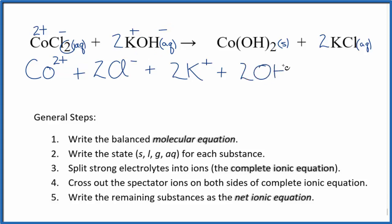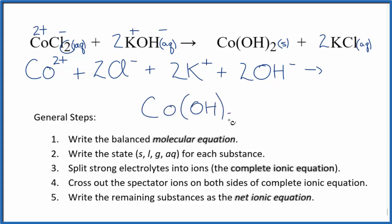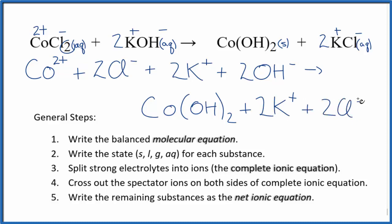These are the reactants in our net ionic equation. For the products, we don't split solids apart in net ionic equations, so this precipitate — Co(OH)₂, cobalt 2 hydroxide — we just leave that together. Then we have two potassium ions and two chloride ions. This is the complete ionic equation.